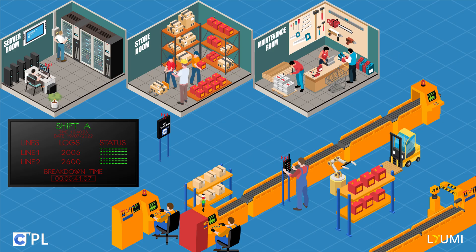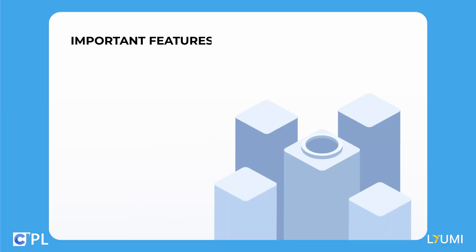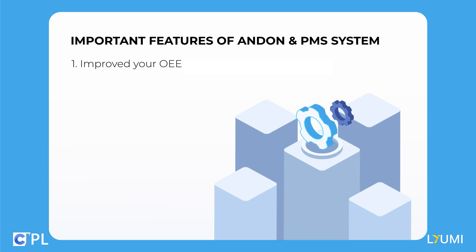The production line can get back up and running without any further problems. Key features of the Undawn PMS system include improving your OEE: manufacturers can use Undawn production monitoring systems, which visually alert operators of issues to prevent downtime and improve communication, while providing real-time data analysis for data-driven decision-making and identifying areas for improvement.